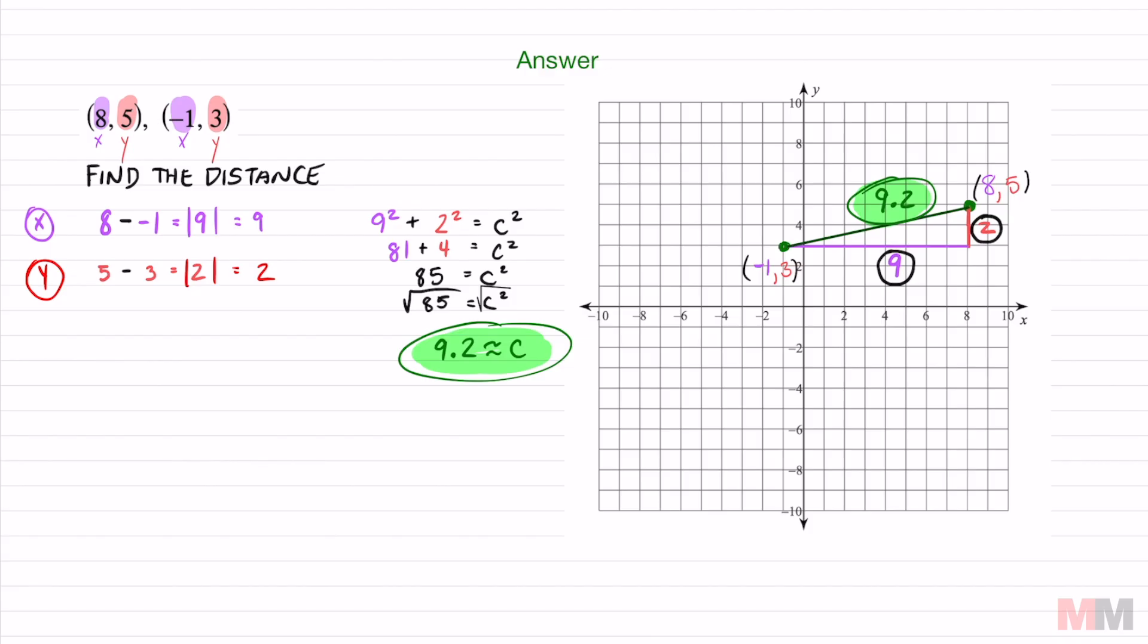Once you have the distance of the two legs, plug it into the Pythagorean theorem. And don't forget the last step of the Pythagorean theorem is to square root both sides to get this diagonal distance.